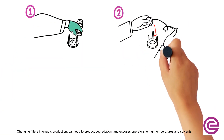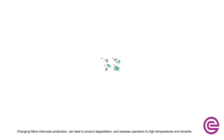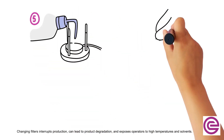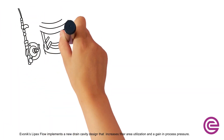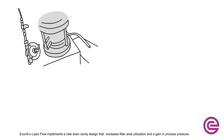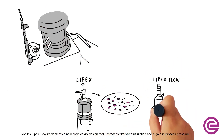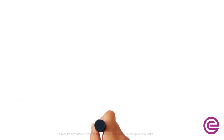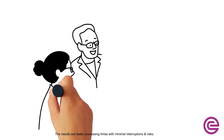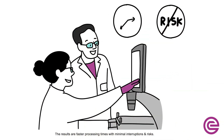Changing filters interrupts production, can lead to product degradation, and exposes operators to high temperatures and solvents. Evonik Lipex Flow implements a new drain cavity design that increases filter area utilization and a gain in process pressure. The results are faster processing times with minimal interruptions and risks.